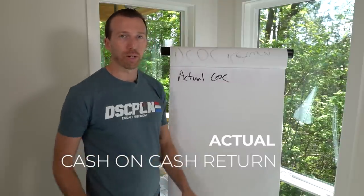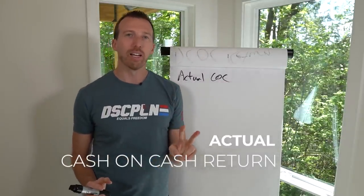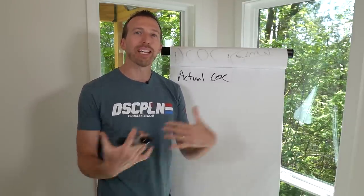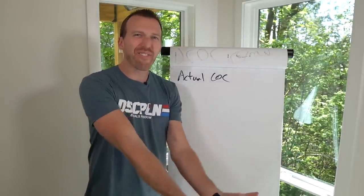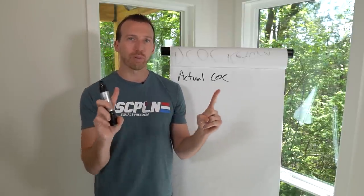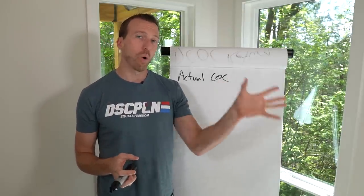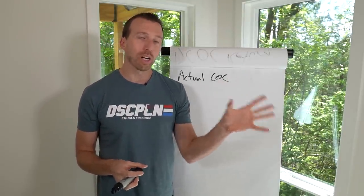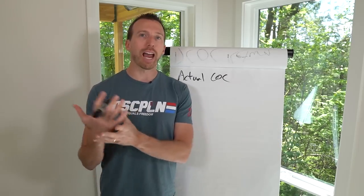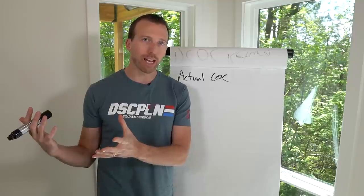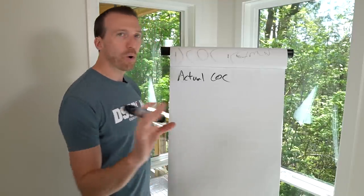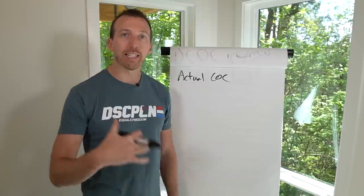What is actual cash on cash return? There are two ways to calculate this out. Basically it's your out-of-pocket expenses that you put into a deal — the money you invested — and the return you got. There are two real ways to do it: one is a total return on a project such as a flip, and another is your annual return, your annual cash on cash, which would apply to a rental. Let's go over the simpler version: out of a flip.